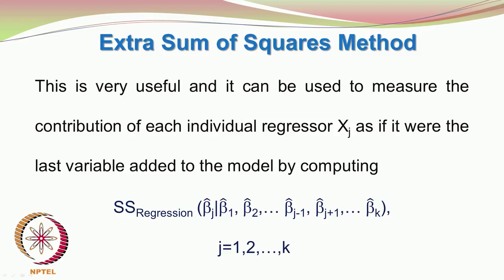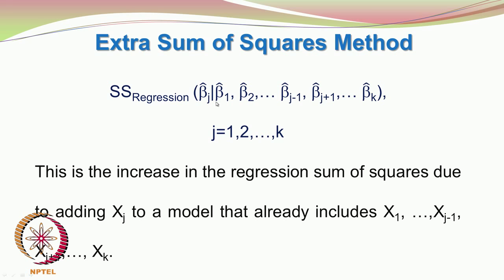You first develop a model without the parameter beta j — that is, without accounting for the regressor variable xj. You consider all other variables and develop the model, then see the impact of bringing beta j into the regression model equation. The sum of squares of regression due to beta hat j, given that all other parameters are already in the model, measures the increase in regression sum of squares due to adding xj to a model already containing all other regressors.